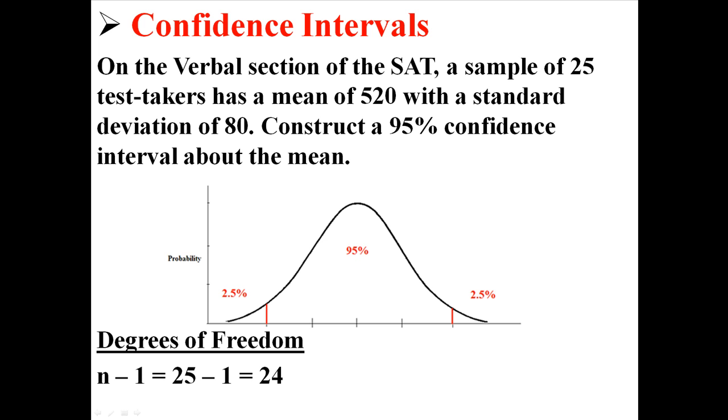And because this is a T test, because we don't know the population's standard deviation, we're going to calculate degrees of freedom. In this case, degrees of freedom is n minus 1. We have a sample of 25, so 25 minus 1 is 24. We have 24 degrees of freedom.